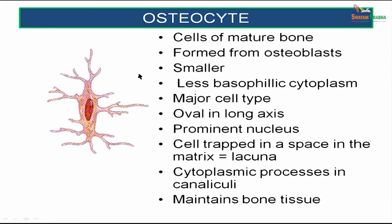The osteocyte is the mature cell of bone. They are formed from osteoblasts, are slightly smaller in size, and less basophilic, but are the main cell type found in bone. They are oval in shape with a prominent nucleus. These cells are found in spaces called lacunae — literally trapped in the matrix. They have cytoplasmic processes present in spaces called canaliculi. Their function is to maintain bone tissue.